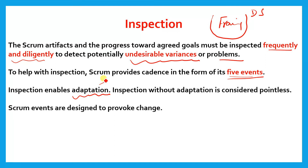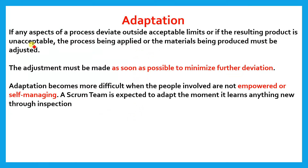Inspection enables adaptation — the last pillar. Inspection without adaptation is considered pointless. If we do inspection, see a deviation, and do not adopt changes, the inspection is pointless. When we inspect frequently and diligently and see any undesirable variance, we have to adapt and solve that variance as soon as possible. Scrum events are designed to provoke change. If any aspect of the process deviates outside acceptable limits or the resulting product is unacceptable, the process being applied or the material being produced must be adjusted as soon as possible to minimize further deviation. These questions might come in your exam.